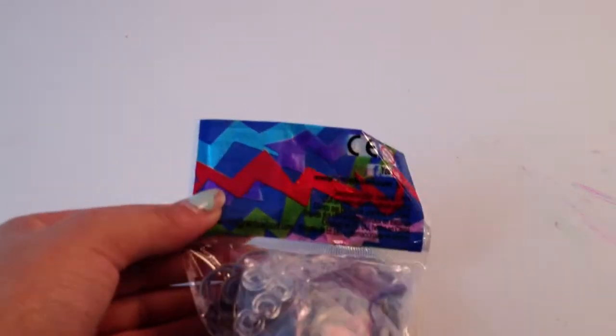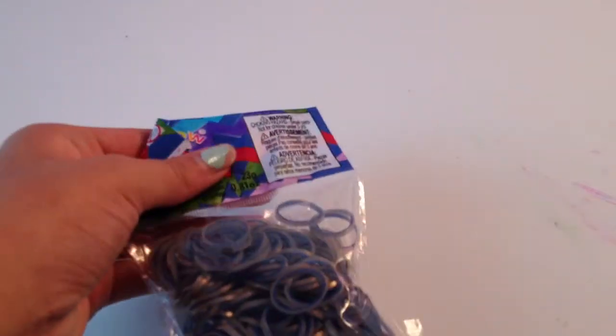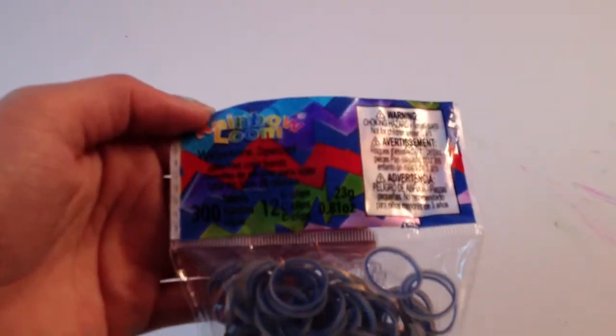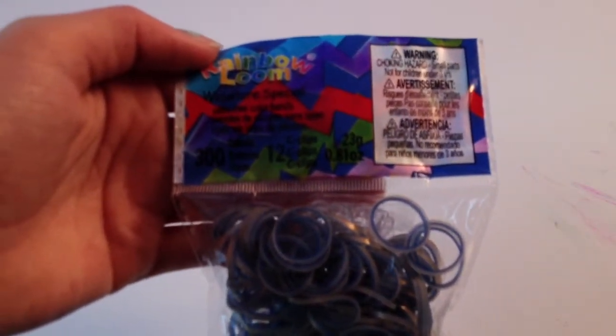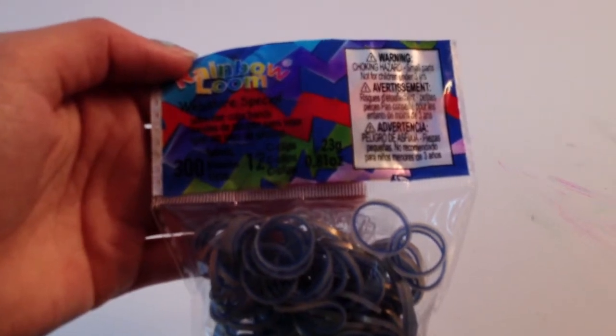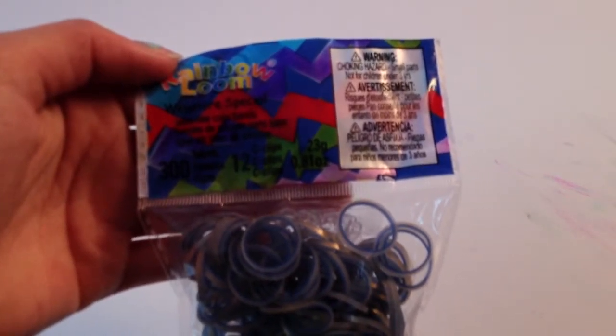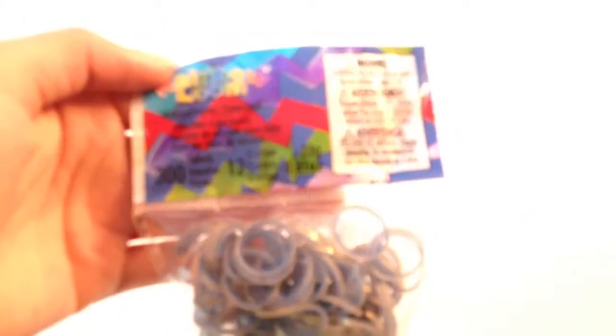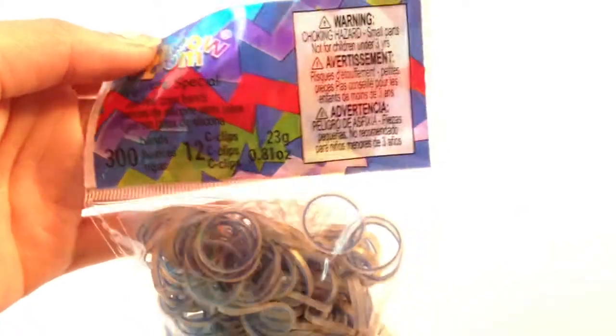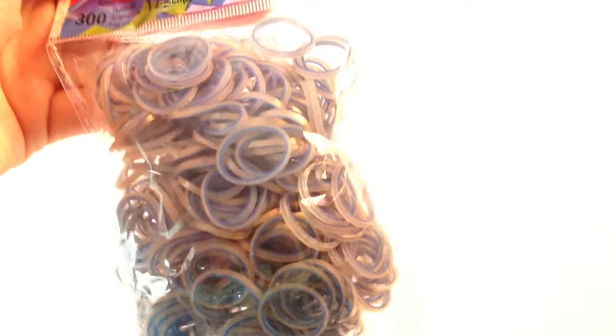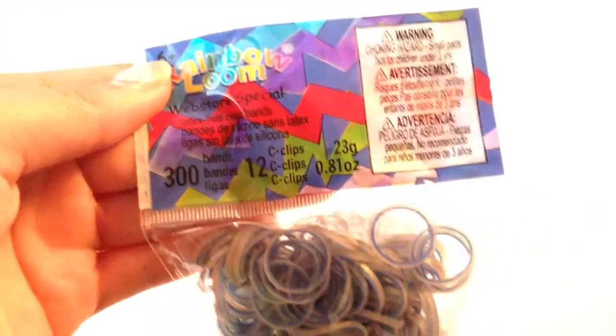And so it just comes in a package like this and this is what it looks like. It's really cool and shiny. I really like these bracelets. And then it comes in, it says web store special. It won't tell you what it is but it says right here on this little sticker thing. I don't want to give out any of this information. Right here. See. Egyptian navy right here.